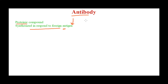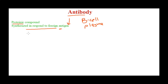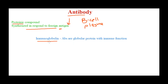Specific antibodies are produced by our B cells — more specifically, plasma cells. Now, antibodies are globular proteins with immune function, and that is why they are also called immunoglobulins. So antibody and immunoglobulin essentially mean the same thing. Now you know why they are called immunoglobulins.